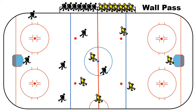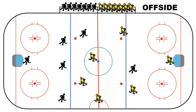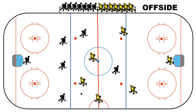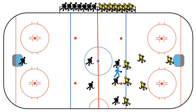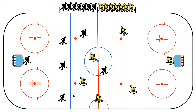One thing players cannot do is offside. A player cannot cross the blue line before the puck does. If a player crosses the blue line before the puck crosses it, that is offside and is not allowed. In that case there would be a face-off at the closest red circle near where the offside happened. If the puck crosses the blue line first and no player is behind the blue line, it is fine — not offside.